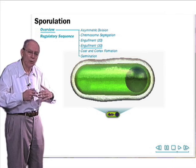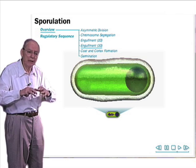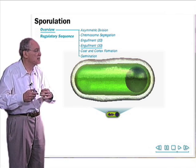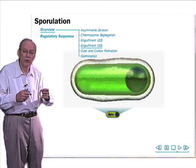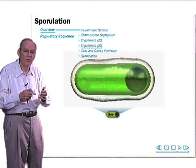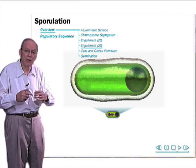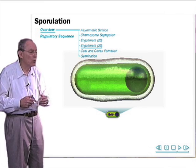One is the remodeling of the chromosome in the four-spore into a donut-like structure, in which state it's highly resistant to radiation. The second is the formation of a thick layer of cell wall material, called the cortex, around the four-spore. And then a thick protein shell made up of many different proteins that creates a protective shell around the spore.